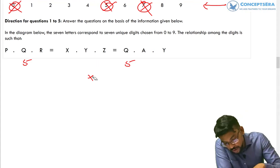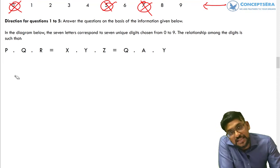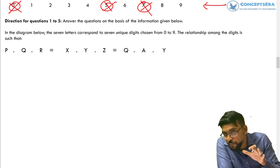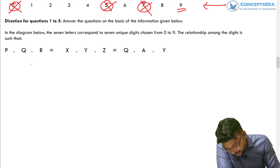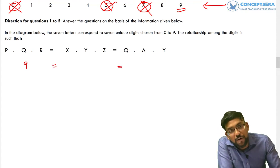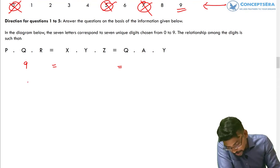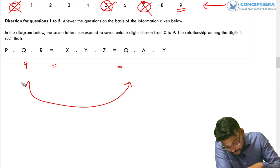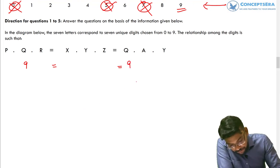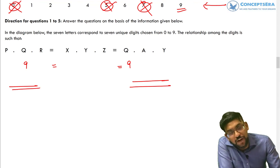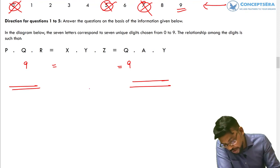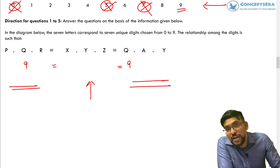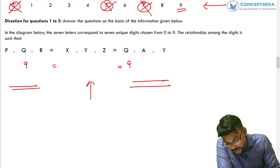Now we are left with seven digits and seven letters, so we must use all of them. We have to use nine somewhere. If we put nine in the first product, the second and third products must also be multiples of nine. Since Q is common between the first and last products, we set Q = 9, making both of those multiples of nine. Now we must ensure the second product is also a multiple of nine.